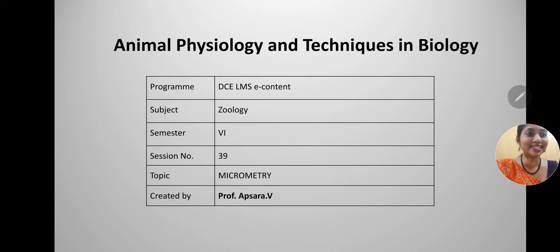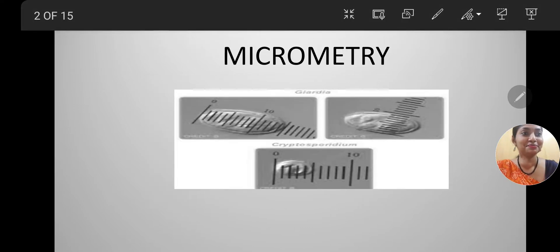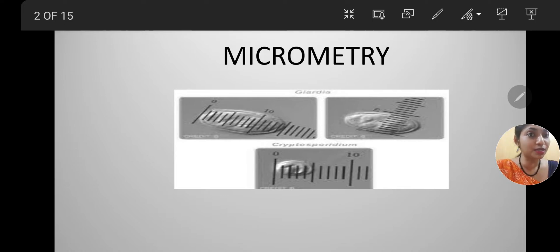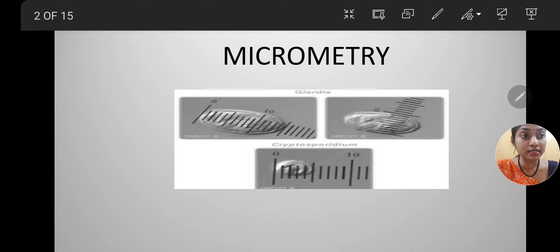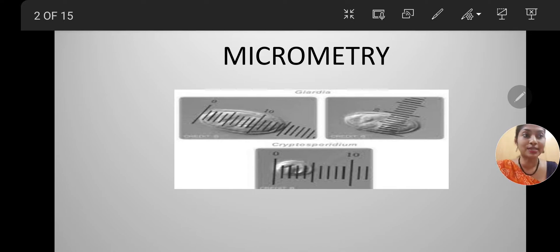Hello students, welcome to DC LMS e-learning platform. In today's session, let us learn about micrometry. In this slide, you can observe that Giardia and Cryptosporidium are being measured for their length and breadth, but the scale used here is not a normal scale but a microscopic scale known as a micrometer. Using a micrometer we can measure the length and breadth — the size of a cell — and this process is known as micrometry.